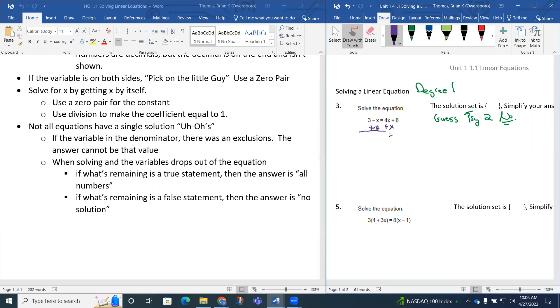I'm going to draw a line to add this all up. The 3 is going to come down. The negative x and the positive x are going to zero out. That's a zero pair. The equal sign comes down. 4x plus another x is 5x altogether. The 8 comes down. So now I have 3 equals 5x plus 8.